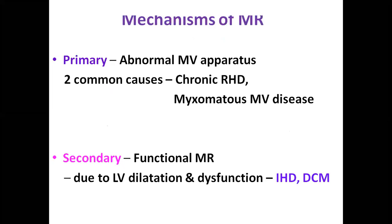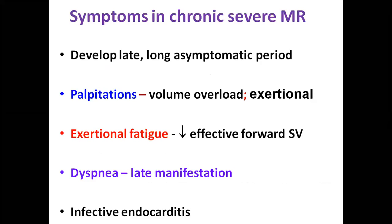Moving on to mitral regurgitation: it can be primary due to abnormal mitral valve apparatus — common causes being rheumatic heart disease and myxomatous mitral valve disease — or secondary functional MR due to LV dilatation and dysfunction seen in ischemic heart disease and dilated cardiomyopathy. Chronic severe MR usually has a long asymptomatic period. The earliest symptom is palpitation due to volume overload, usually exertional. Exertion and fatigue due to decreased effective forward stroke volume is important. Dyspnea occurs in the late period, sometimes with mild to moderate MR presenting with infective endocarditis.